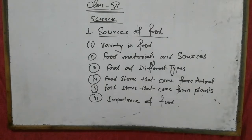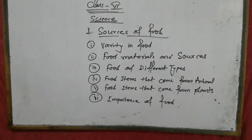But if I ask you where milk, egg, meat, chicken, fish come from — the answer is from animals. That means the sources of food are plants and animals. Understood?